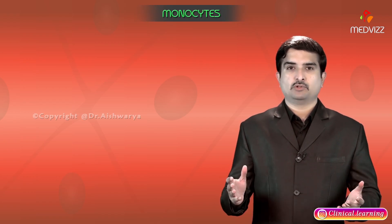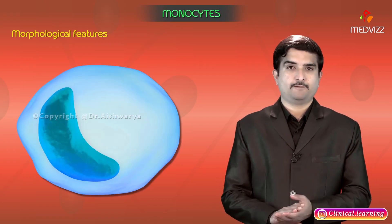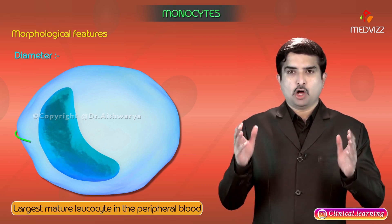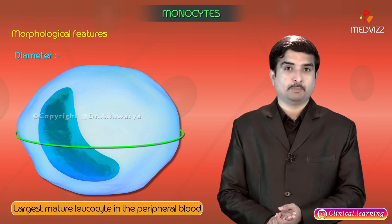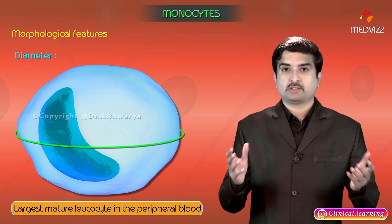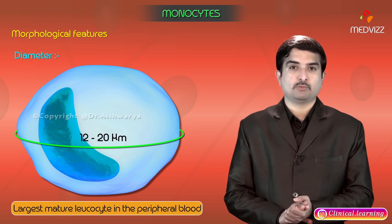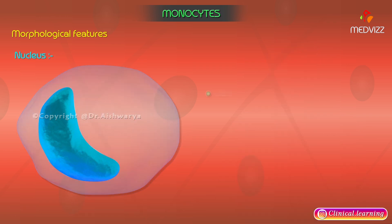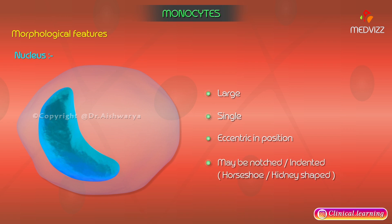Let us talk about the morphological features of monocytes. The monocyte is the largest mature leukocyte in the peripheral blood, measuring approximately 12 to 20 micrometers in diameter. The nucleus of a monocyte is large, single, and eccentric in position — that is, present on one side of the cell. It may be notched or indented.